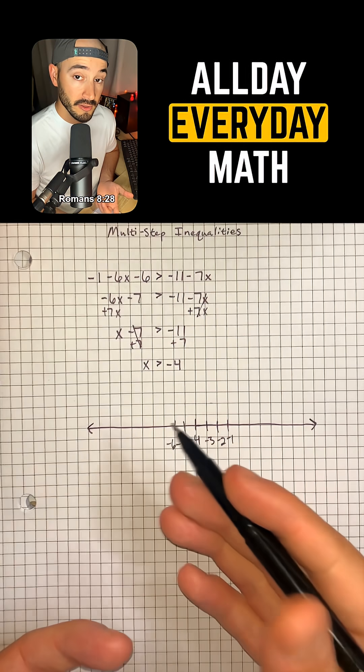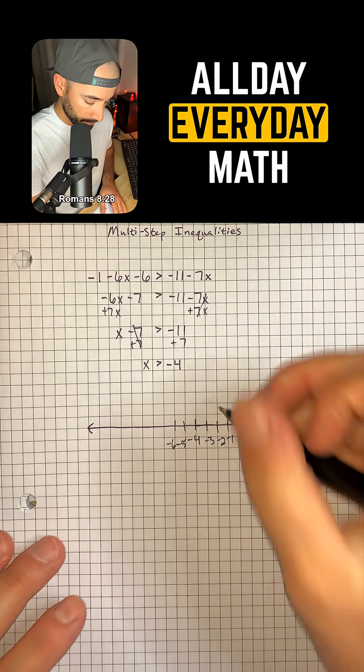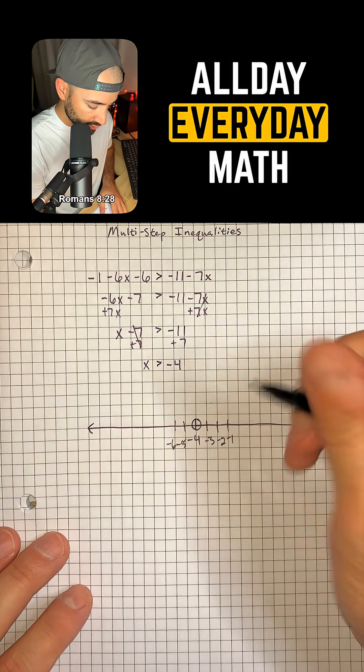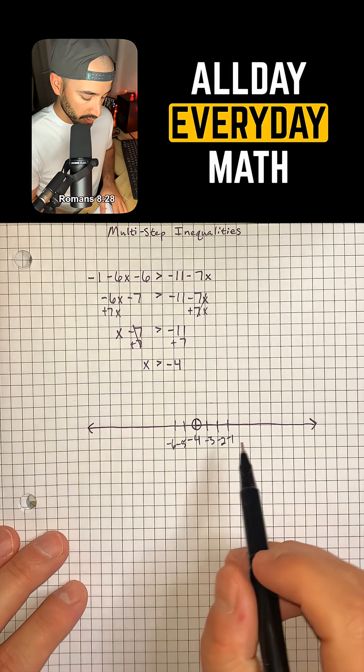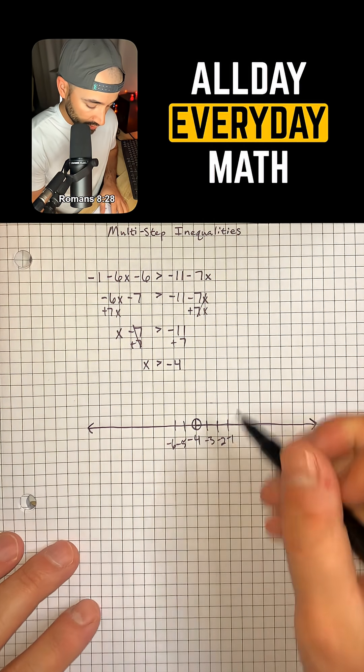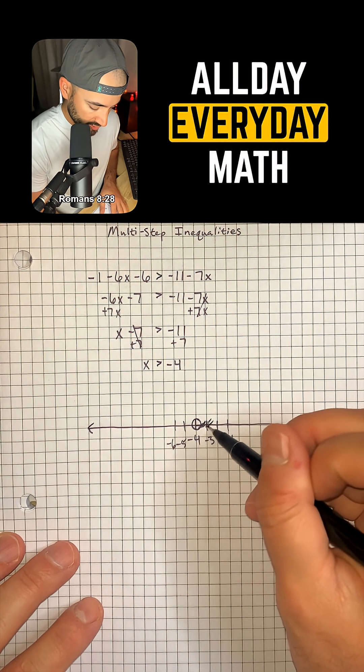Because it is greater than and not greater than or equal to, we will have an open circle because our solution does not include negative 4. And because it's greater than, we're going to shade to the right on the number line.